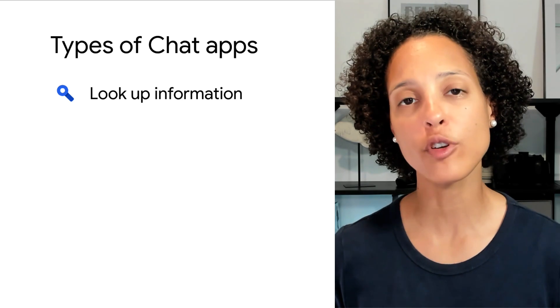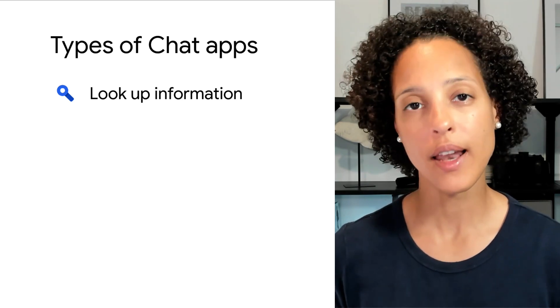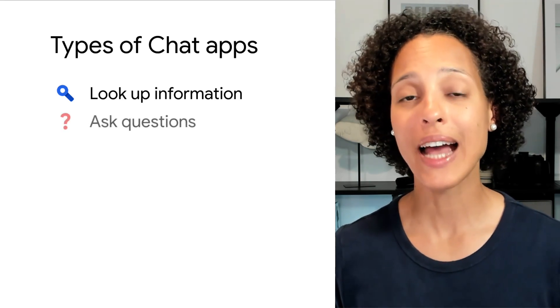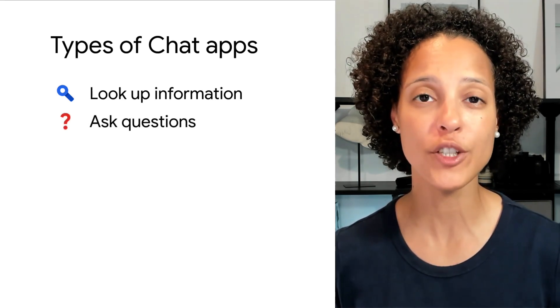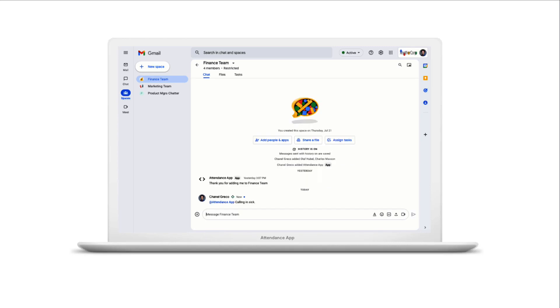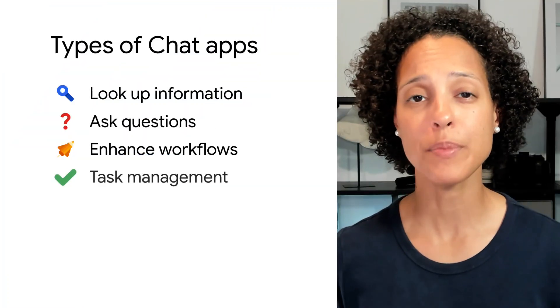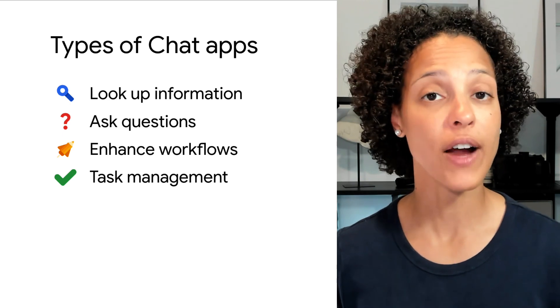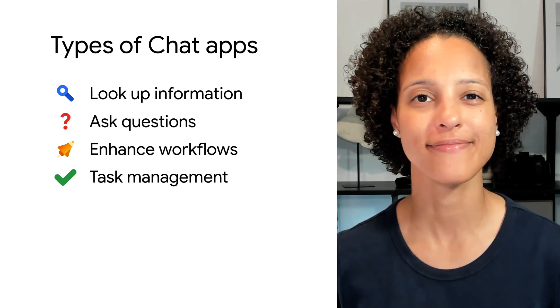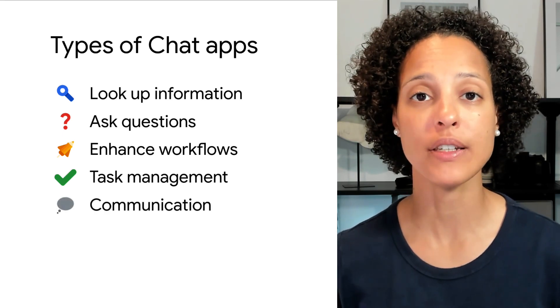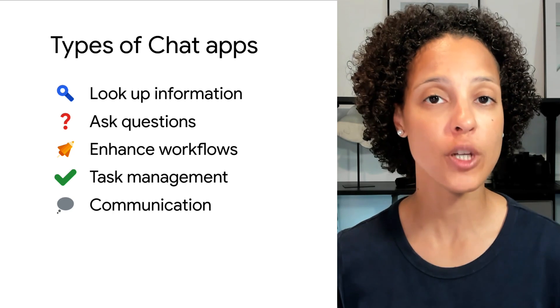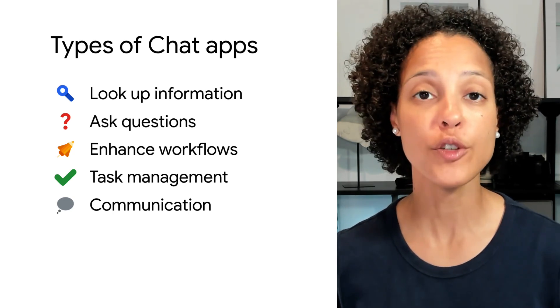Maybe you're wondering, what types of chat apps can I build? As we saw in Sarah's case, a chat app is great for looking up information from other systems like a CRM. You can build Help Center chat apps that answer users' questions. How about enhancing HR or management workflows, like having your calendar blocked out when you're taking time off? Chat apps are great at task management, like filing a bug or assigning a task. You could create a chat app that alerts you when an issue arises, like on your e-commerce site when there's a shipping delay, or infrastructure when a server goes offline.